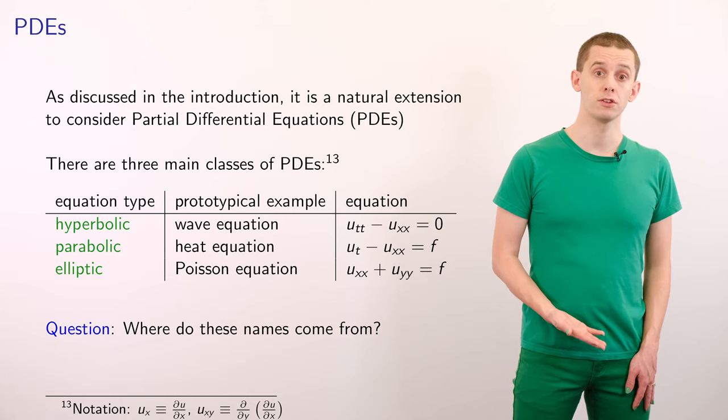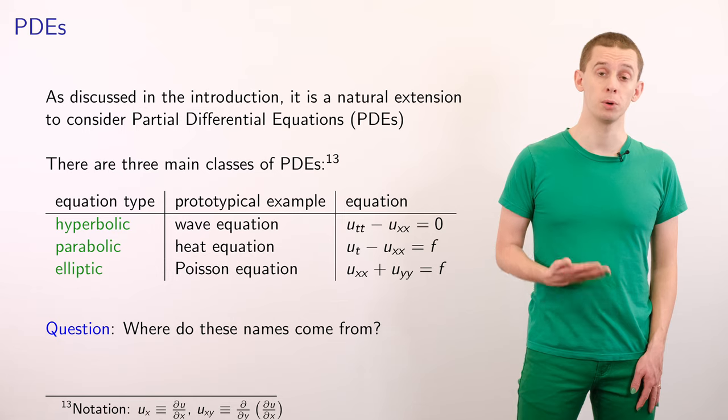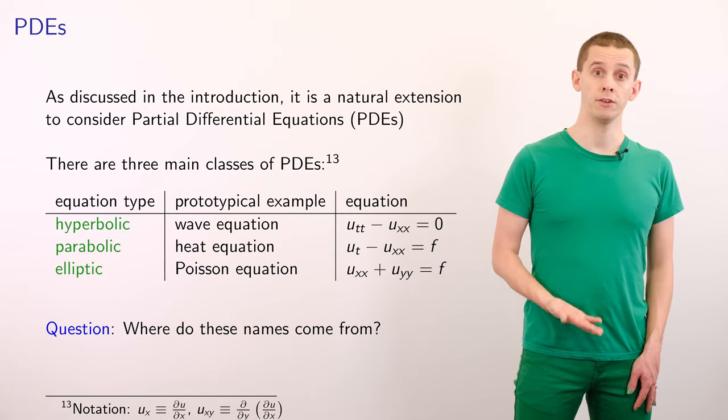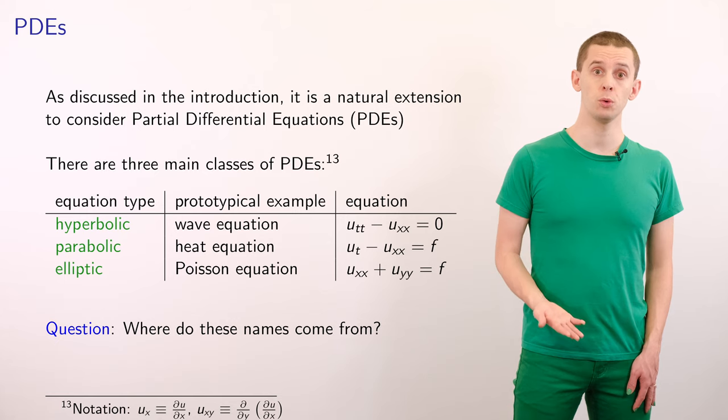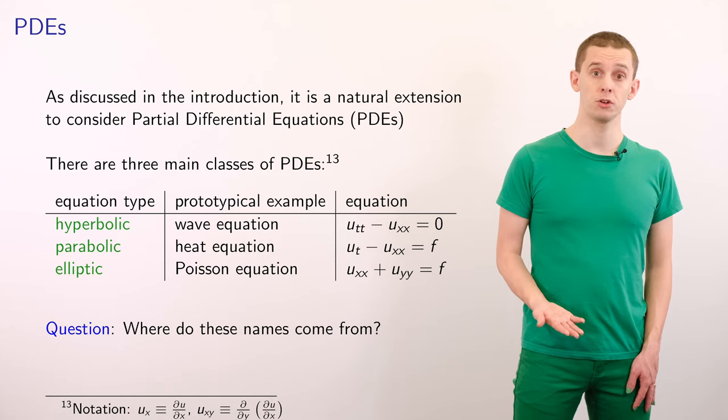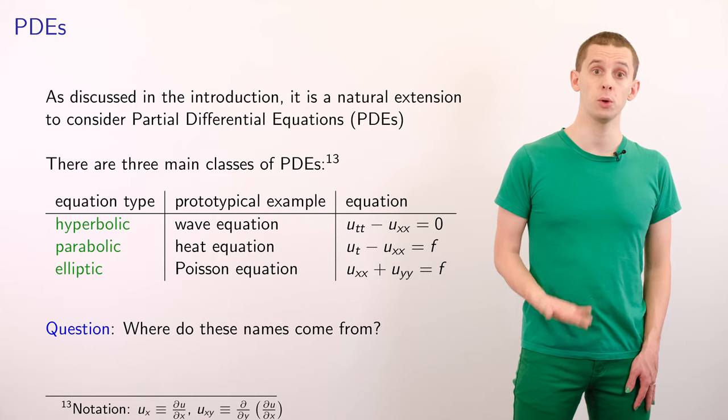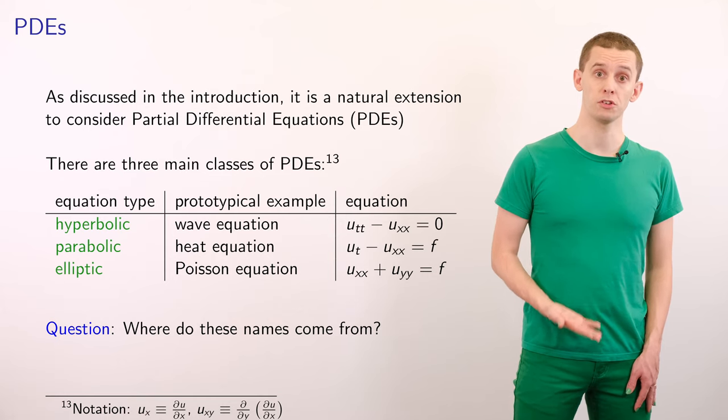The third class are elliptic PDEs, and here, a prototypical example is the Poisson equation, and now we would solve for a solution u as a function of two spatial variables, x and y, and it would satisfy the equation u_xx plus u_yy is equal to a source term f.